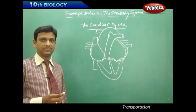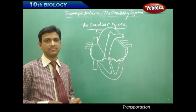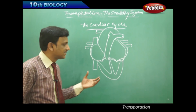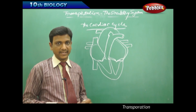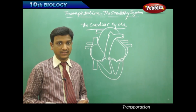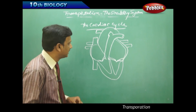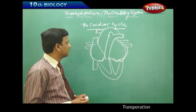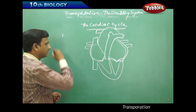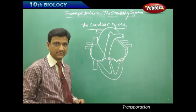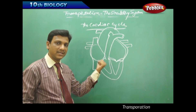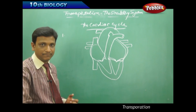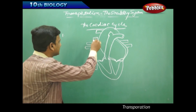We have seen the different types of blood vessels, their structure and functions, and the discovery of their functioning by various scientists. Now let us see the functioning of the human heart. We have already seen the internal structure and various parts of the human heart. Now let us see the mechanism of blood flow done by the heart — the sending and receiving of blood, which we call the cardiac cycle.